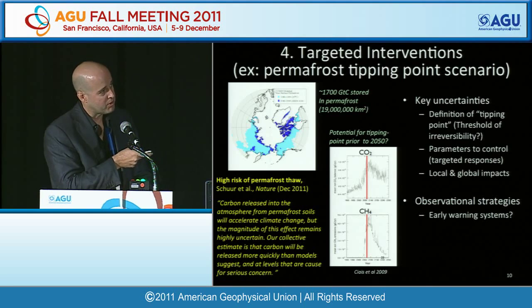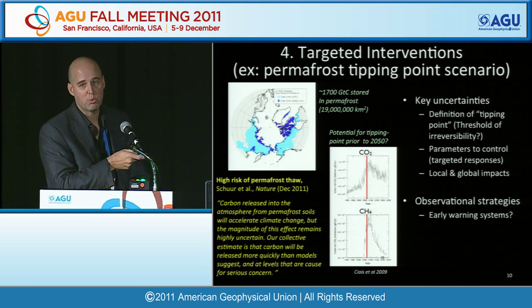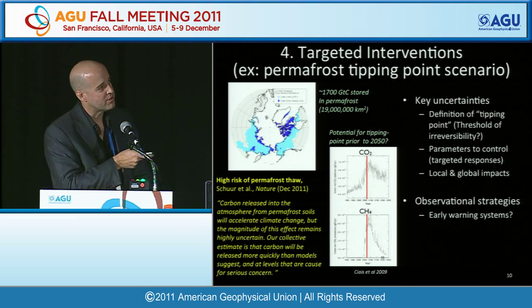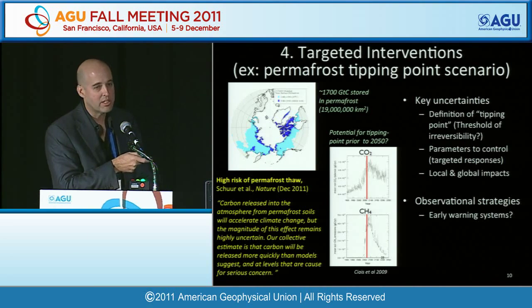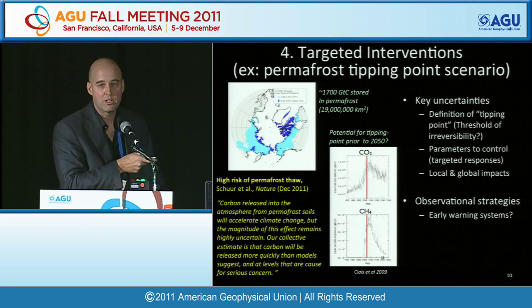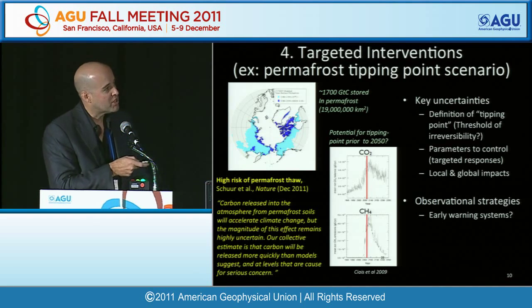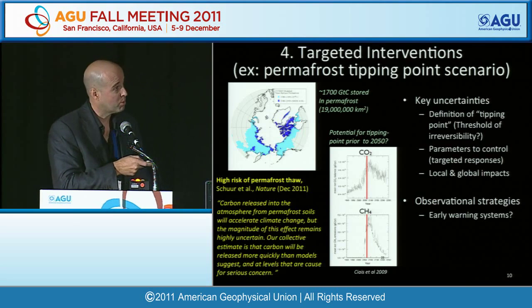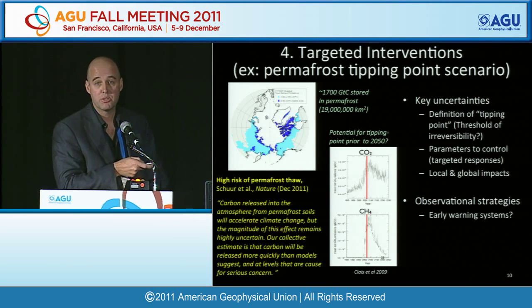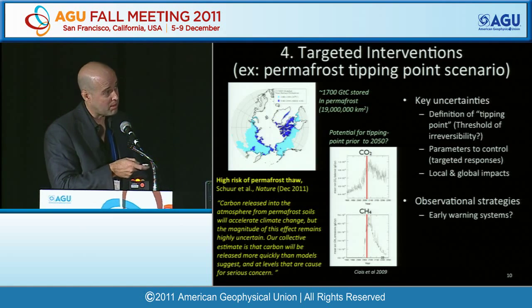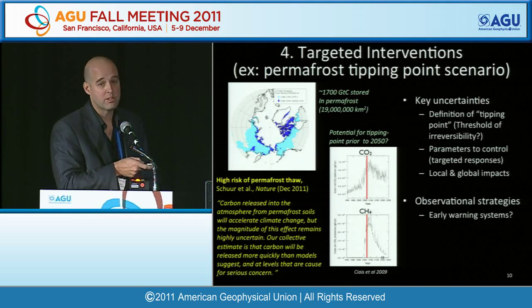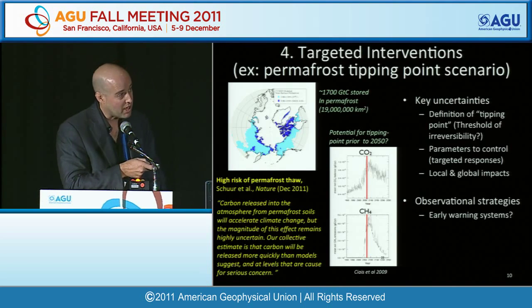The permafrost scenario: there's a significant amount of carbon stored in permafrost regions, approximately 19 million square kilometers containing 1,700 gigatons of carbon — over twice the current atmospheric load. How much is vulnerable to release, and whether it releases as methane or CO2 matters significantly, since methane has much higher forcing particularly on shorter time horizons. These things could represent a serious climate emergency.